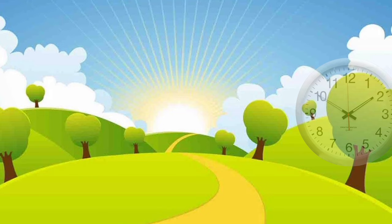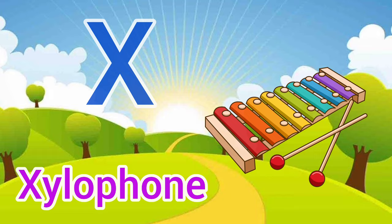X for xylophone, xylophone means xylophone. Y for yarn, yarn means dhaga.